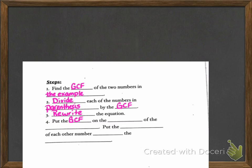And step 4, we're going to put the GCF on the outside of the parentheses. Put the quotient, which is the answer to the division problem, of each other number inside the parentheses.